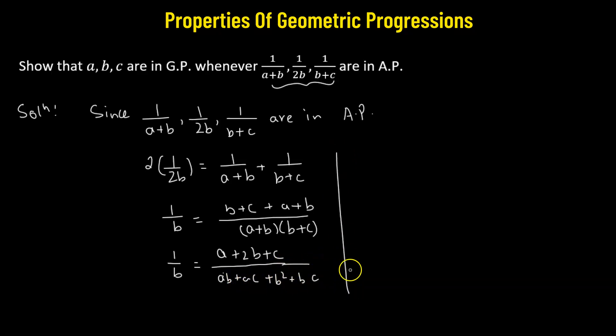We'll cross multiply. The cross multiplying gives us ab plus ac plus b squared plus bc. That equals b multiplied by a plus 2b plus c. You have ab plus 2b squared plus bc.